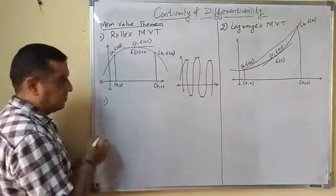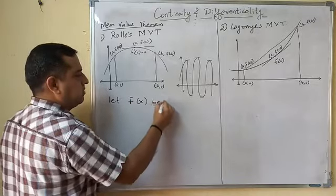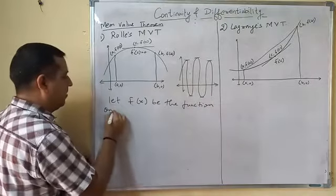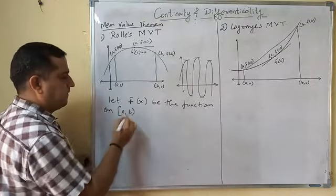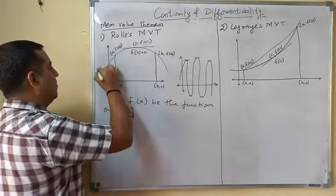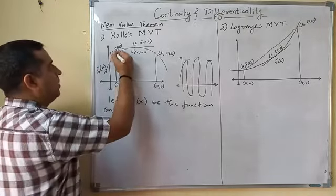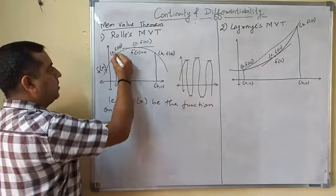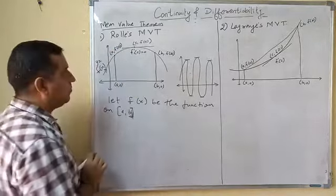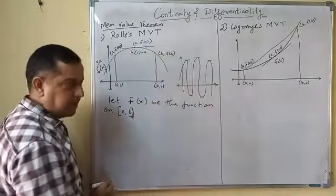Here we have three conditions. First of all, let f(x) be the function on closed interval [a,b]. This is your function f(x), and this is your closed interval [a,b]. Here, point has x-coordinate a and y-coordinate f(a).